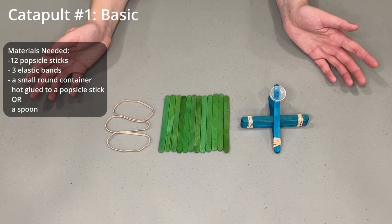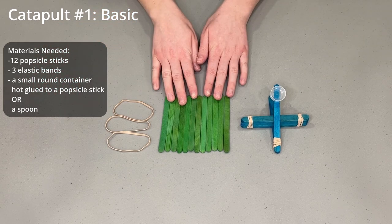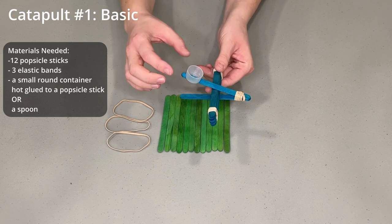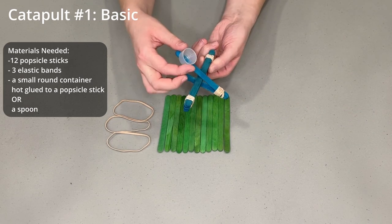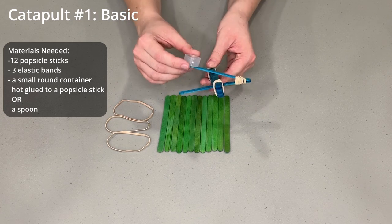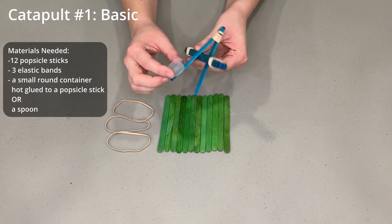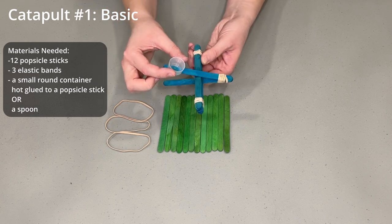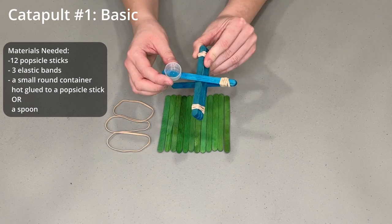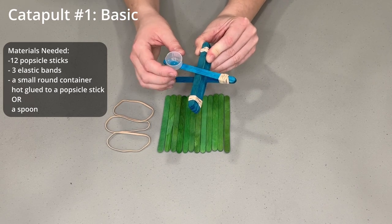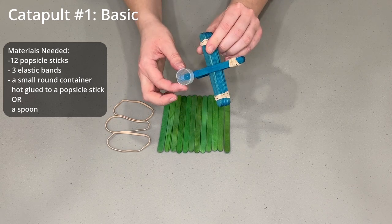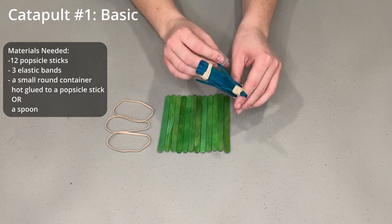All you need for this first catapult are 12 popsicle sticks and three elastic bands. And then for mine I put a tiny measuring spoon that I cut the handle off of. You could use a bottle cap or a little container, anything around this size so that you can put in your pom-poms or buttons or marbles or whatever it is that you want to try to launch with this.